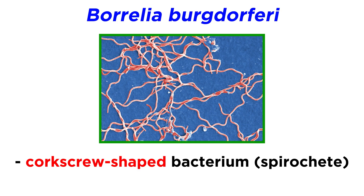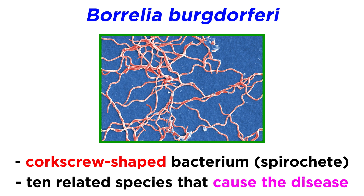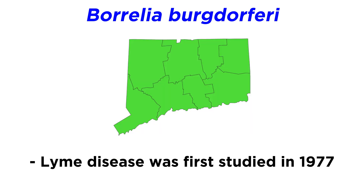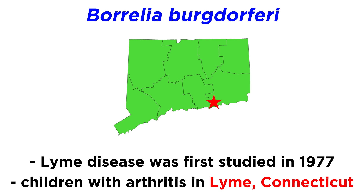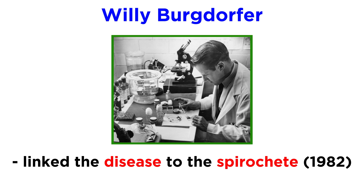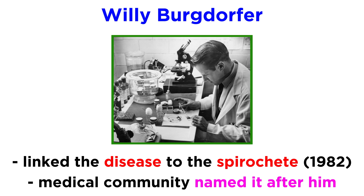Lyme disease is an infection caused by a corkscrew-shaped bacterium, also called a spirochete, named Borrelia burgdorferi. There are at least ten related species of Borrelia that can cause Lyme disease in animals and humans. Lyme disease was first studied in 1977, when a cluster of children with arthritis were found in Lyme, Connecticut. In 1982, Willy Burgdorfer linked the strange disease to the spirochete, and the medical community honored his discovery by naming it Borrelia burgdorferi.